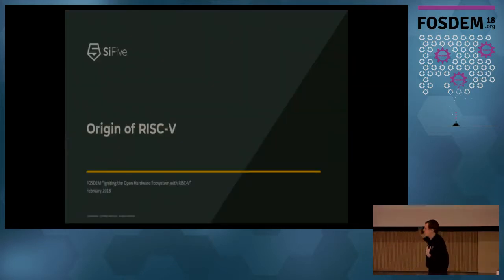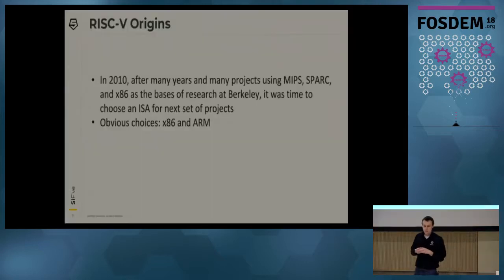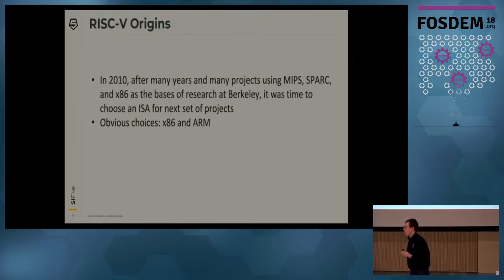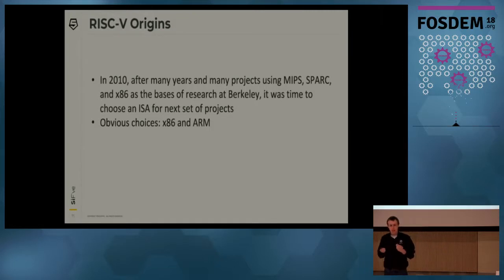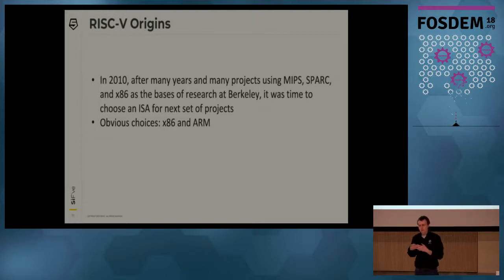Now I'm going to talk about the origin of RISC-V. We've been developing this ISA for about eight years. We were at Berkeley doing computer architecture research, and if you're going to build a processor you need an ISA. The only reasonable choices at the time were x86 and ARM. We've done projects based on other systems but they were largely obsolete.